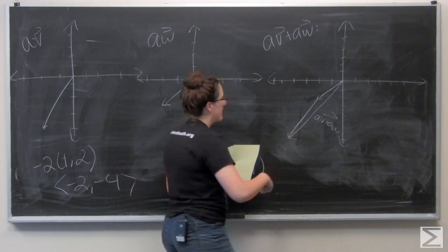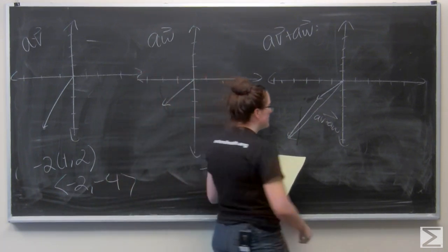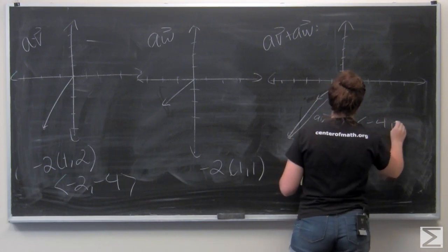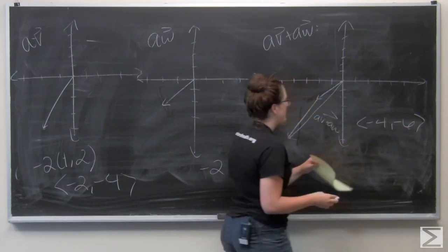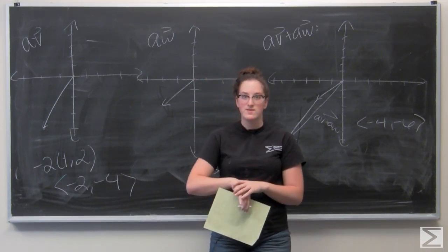So this is the longer vector, and if I add component-wise I can see that it is the vector (-4, -6). So now I've drawn all 6 of my vectors, and I'm all set.